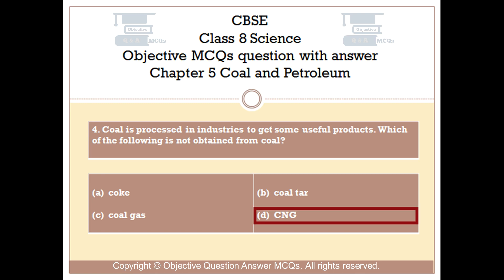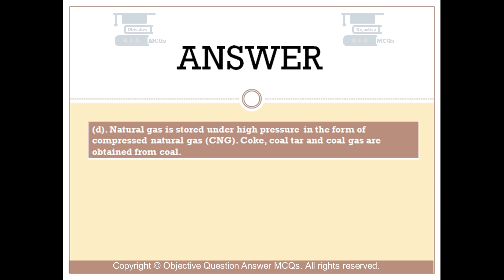The right answer is Option D. Natural gas is stored under high pressure in the form of compressed natural gas, CNG. Coal tar and coal gas are obtained from coal.